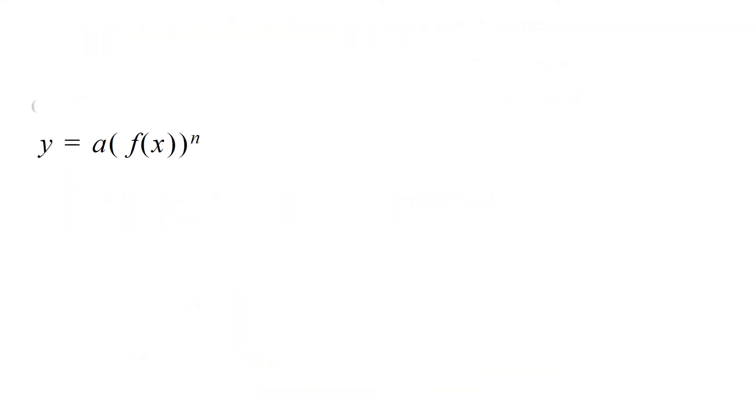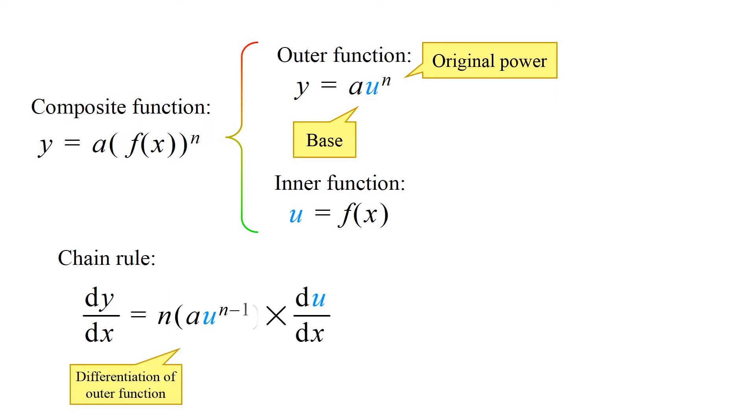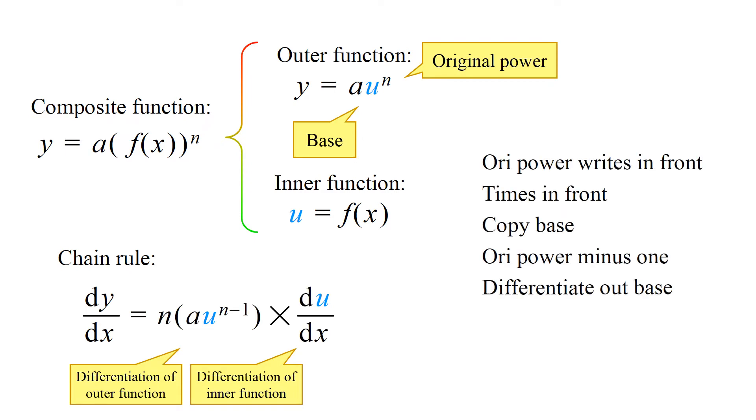However, if we are to differentiate it as a composite function, which comprises an outer function and an inner function, then the chain rule has to be applied. Applying the chain rule here means we differentiate the outer function and then multiply it by the differentiation of the inner function. To remember these steps, another song is used.